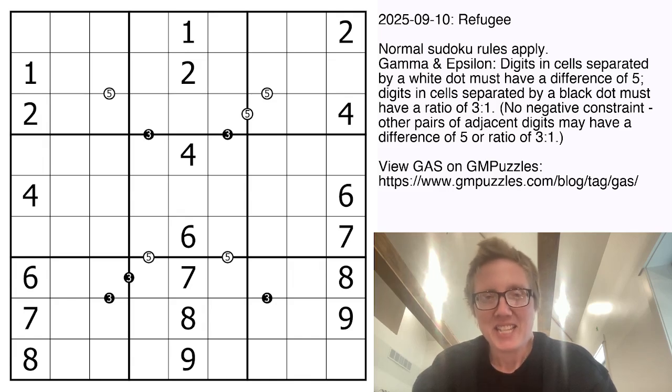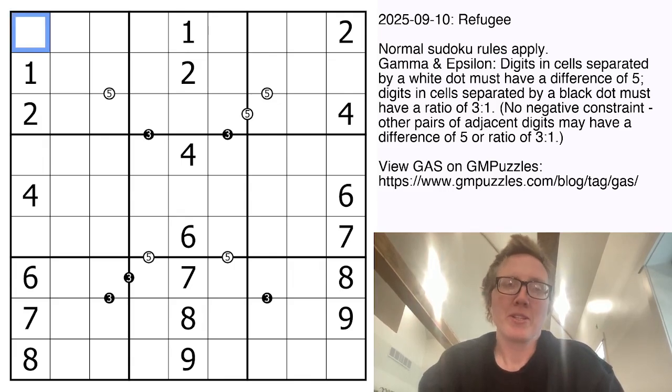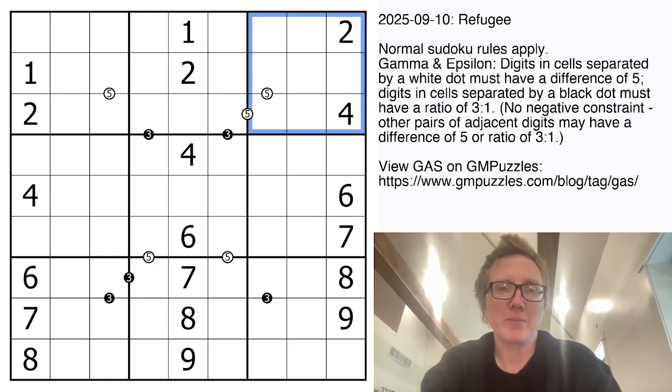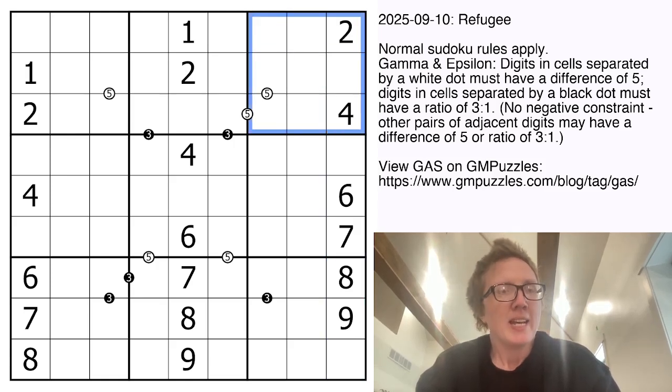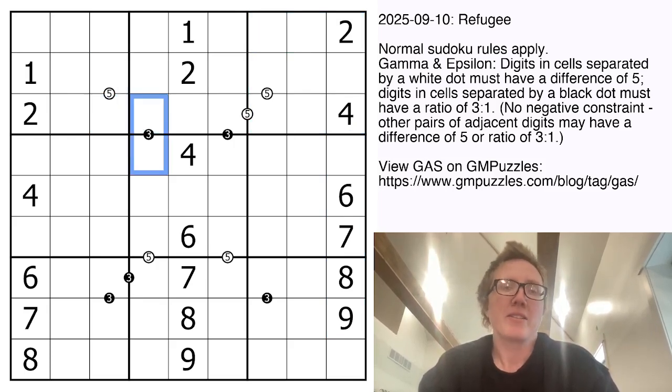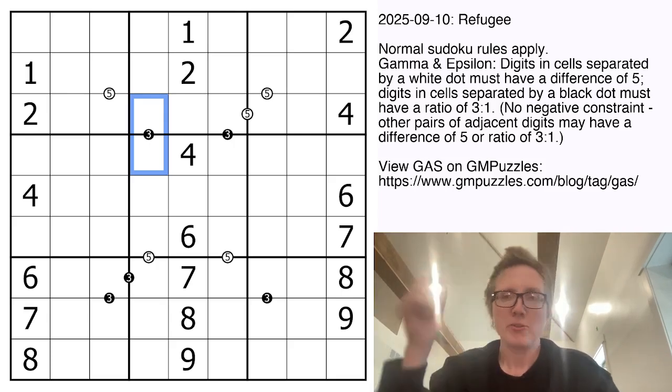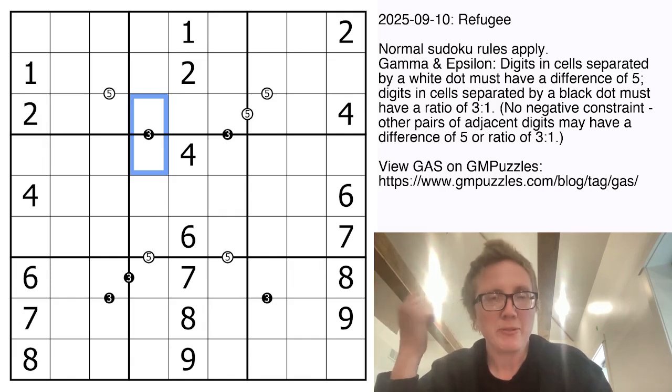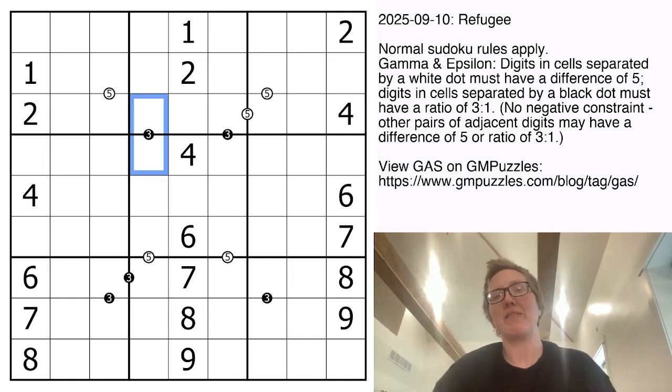This is a gamma and epsilon Sudoku. So we have normal Sudoku rules, meaning we're placing the digits 1 through 9 once each in each row, each column, and each outlined 3 by 3 region. In addition, we have some white dots marked with 5s and some black dots marked with 3s. This is similar but not the same as Kropke pairs. Wherever you see a white dot marked by 5, the two digits on either side have to have a difference of 5.